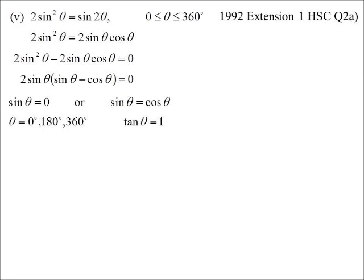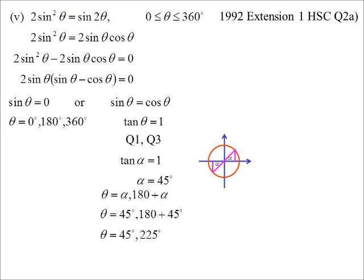And then sine theta equals cos theta, which, of course, is tan theta equals 1 when we divide by cos theta. So, tan theta is 1. We're in the first and the third quadrant. 45 degrees. Combining all my possibilities. There we go. What do we end up with? 5 possible answers for that equation.